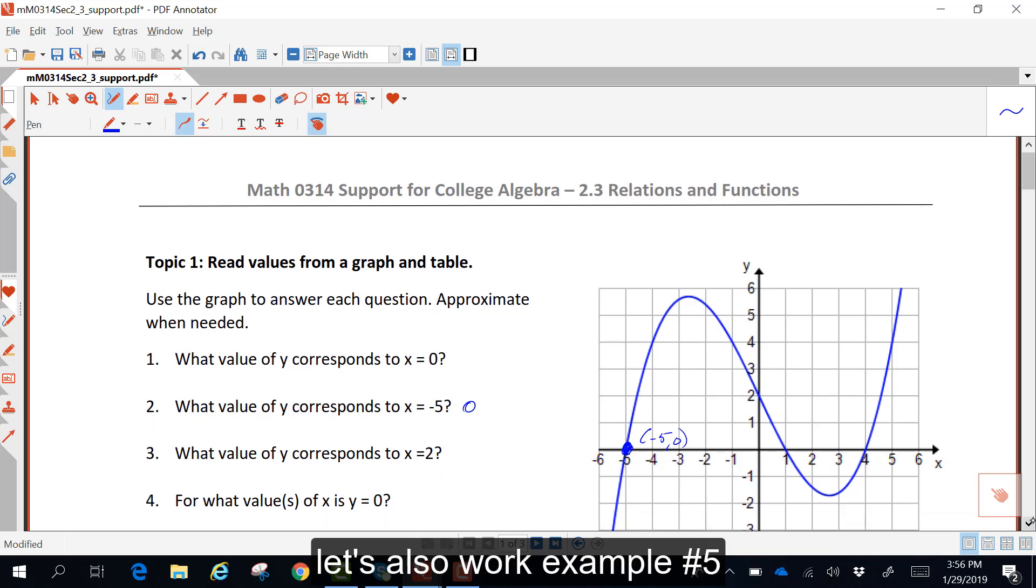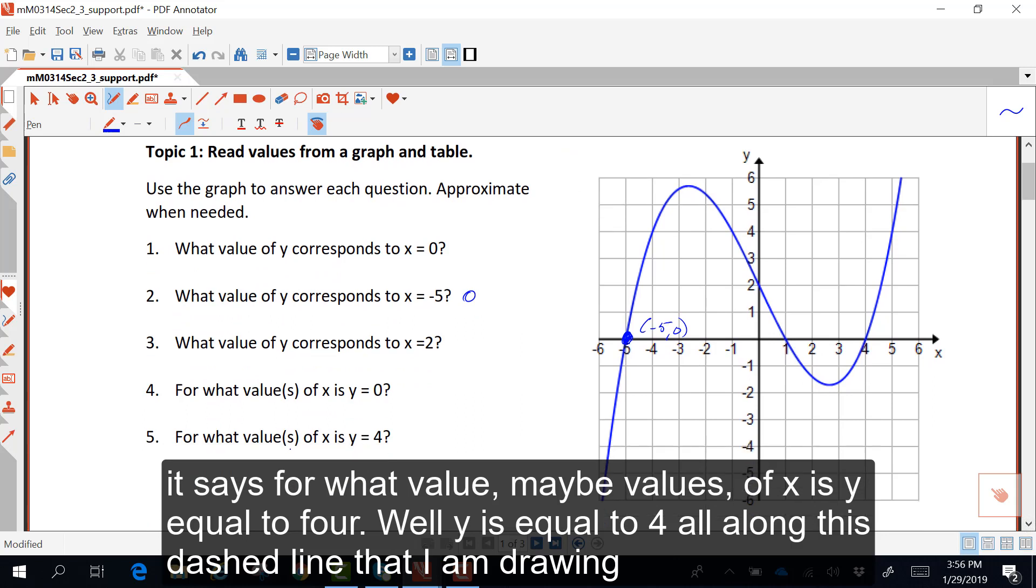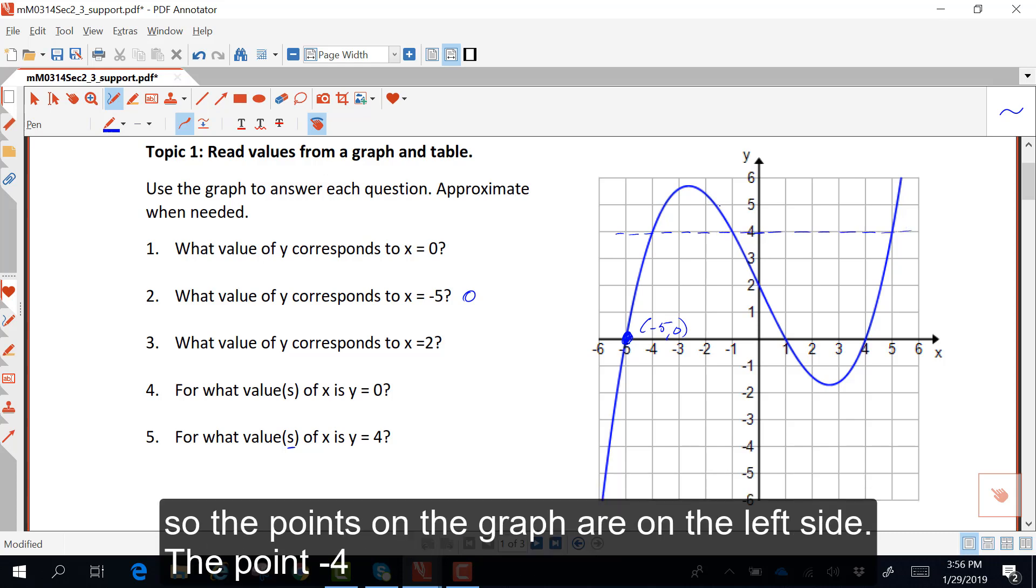Let's also work example number 5. It says for what value, maybe values, of x is y equal to 4. Well, y is equal to 4 all along this dashed line that I am drawing.